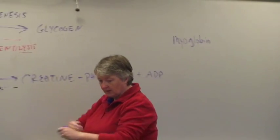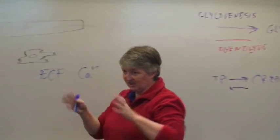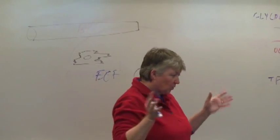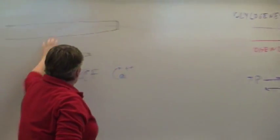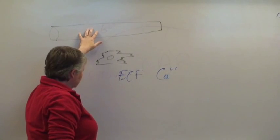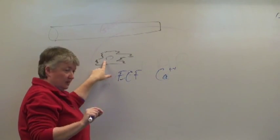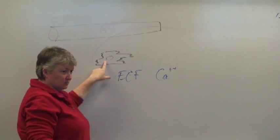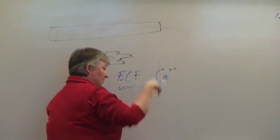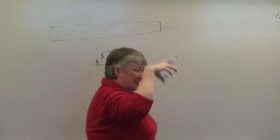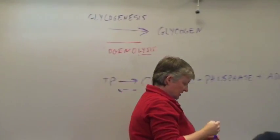When we get to talking about the heart a little bit later, we'll talk about exactly what the significance of that is. Just know for now that skeletal muscle cells store a lot of calcium and cardiac muscle cells do not — they have some, but they don't have nearly as much, so they are very dependent on the levels of calcium ions outside the cell.